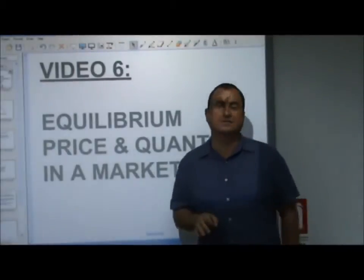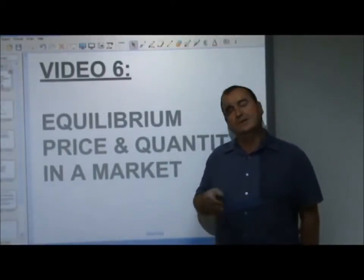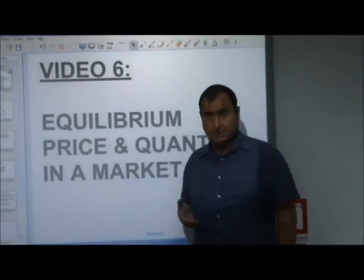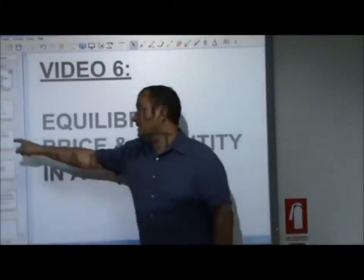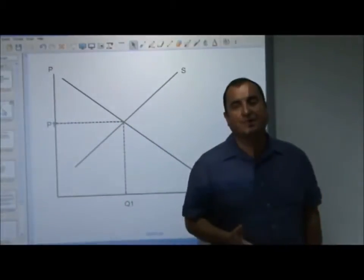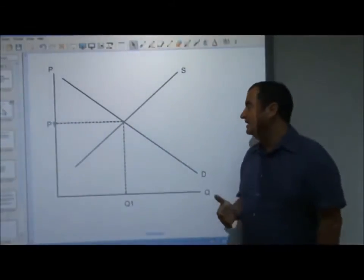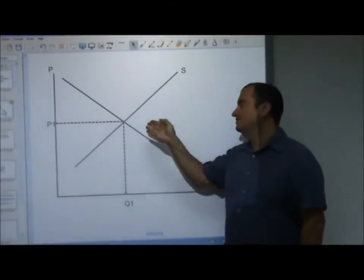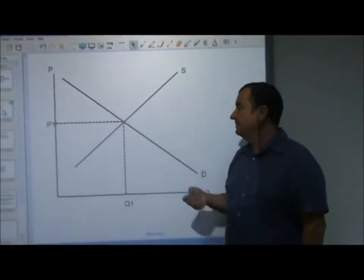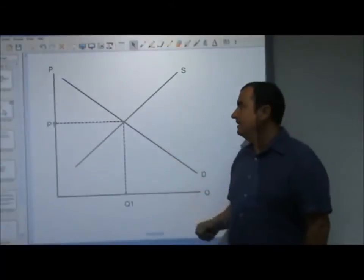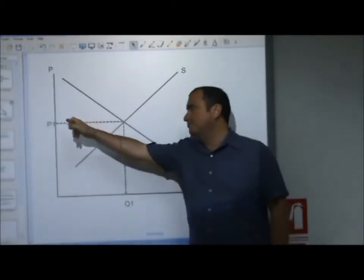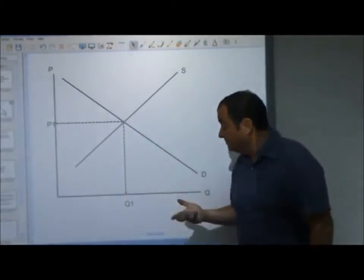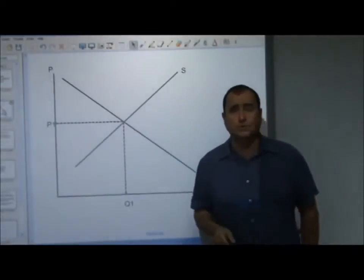We've learned what demand curves and supply curves are. We know demand curves slope downwards and supply curves slope upwards. If we put those two together we get one point where demand equals supply, and that gives us the equilibrium price — labelled P1 — and the equilibrium quantity Q1.